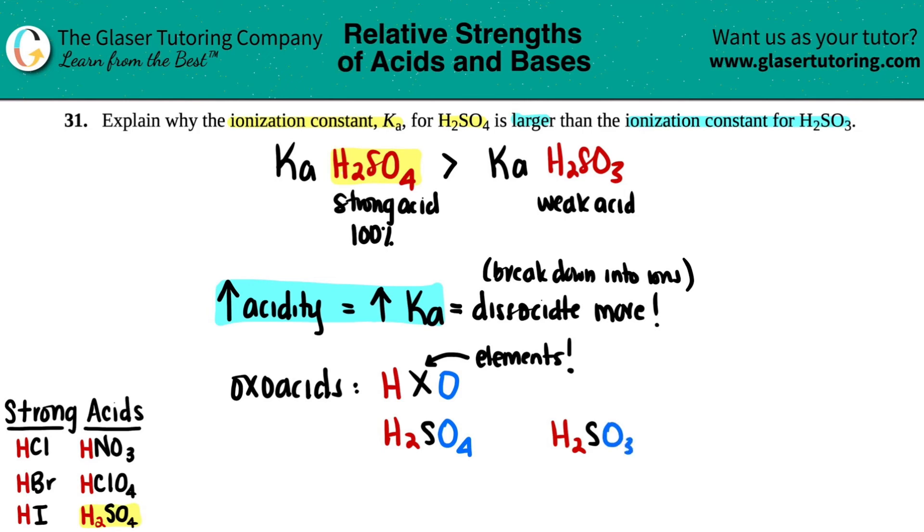The rule of oxoacids is that if you're comparing the same element, it only works for the same element. You can't compare sulfur with the chlorine or something. If you're trying to debate between the same element, the higher the oxygen.